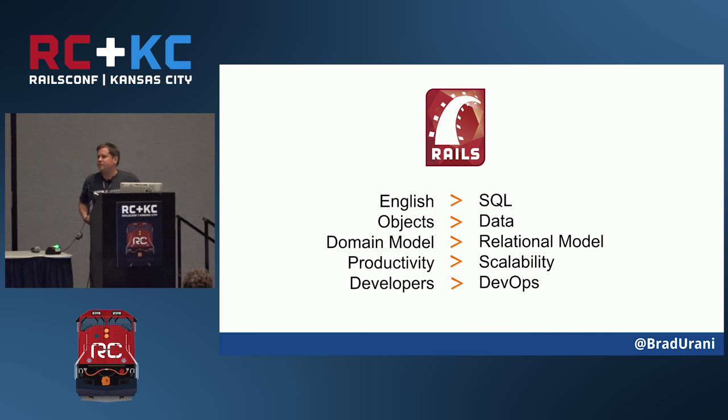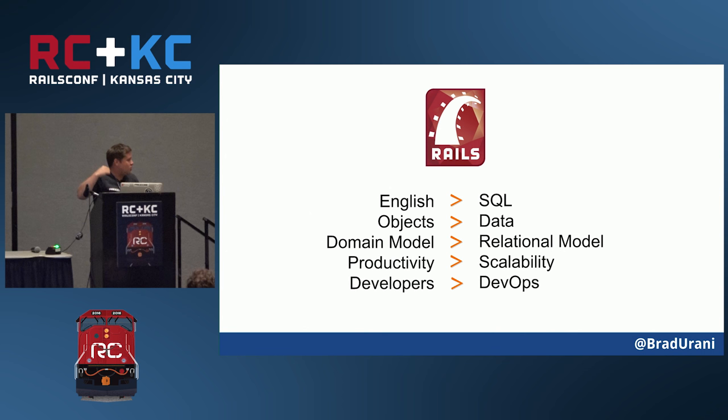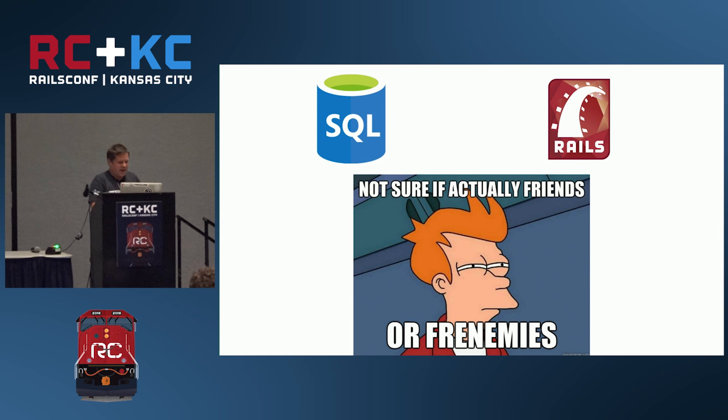It kind of favors developers over DevOps. Your DevOps or DBAs are looking at the query log and they find the slowest query — but the developers say it's split across 12 scopes over four different models all chained together. It makes it hard to find the slow query. SQL and Rails are kind of frenemies — it's hard to think in SQL and also think in Rails at the same time.